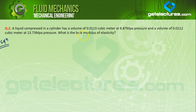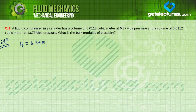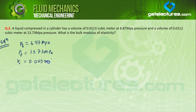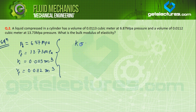The initial pressure is 6.87 MPa and volume is 0.0113 cubic meter, and the final pressure is 13.73 MPa with a volume of 0.0112 cubic meter. Initial pressure P_initial = 6.87 MPa, P_final = 13.73 MPa, V_initial = 0.0113 m³, V_final = 0.0112 m³. From here we can find the bulk modulus.